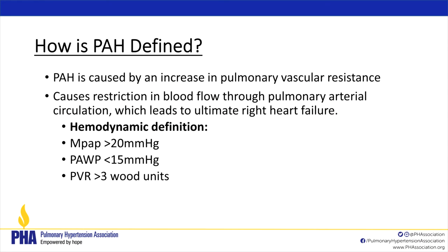How do we define PAH? It's caused by an increase in pulmonary vascular resistance, making it hard for blood to flow through, causing restriction in blood flow through the pulmonary arterial circulation, which leads ultimately to right heart failure. The definition involves a few specific numbers, which we obtain from your right heart catheterization — we'll talk about that a little later.